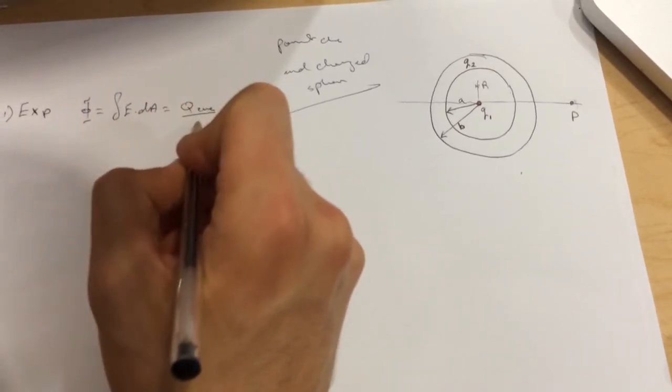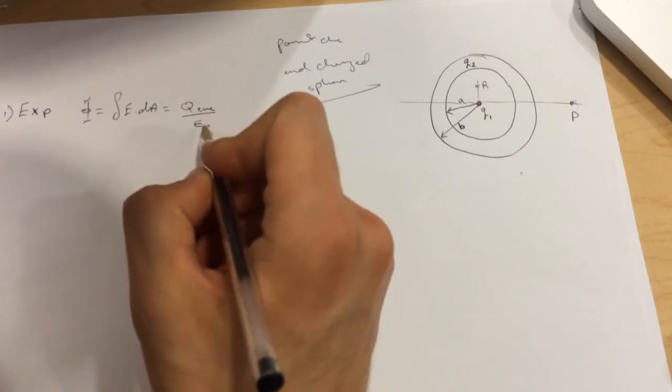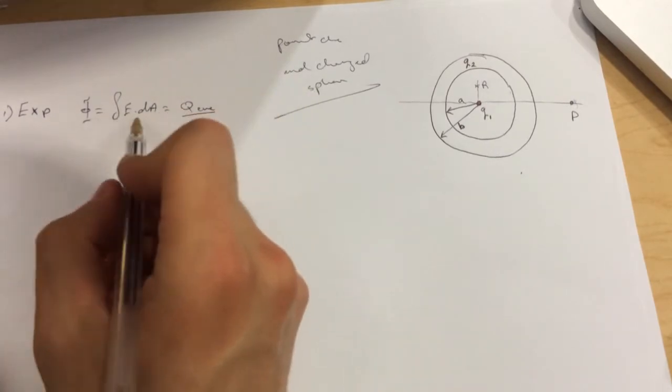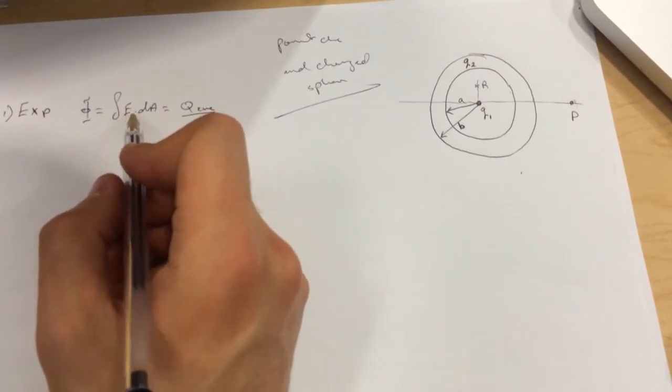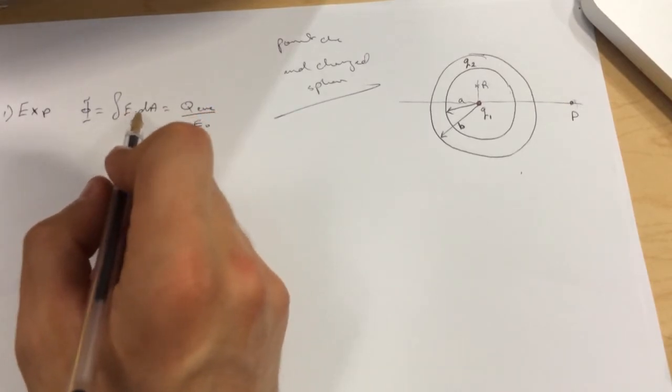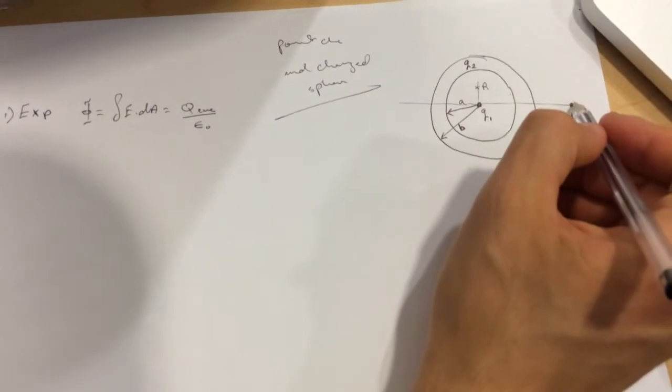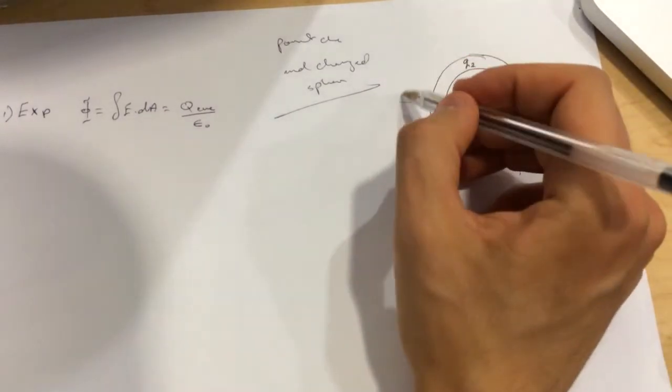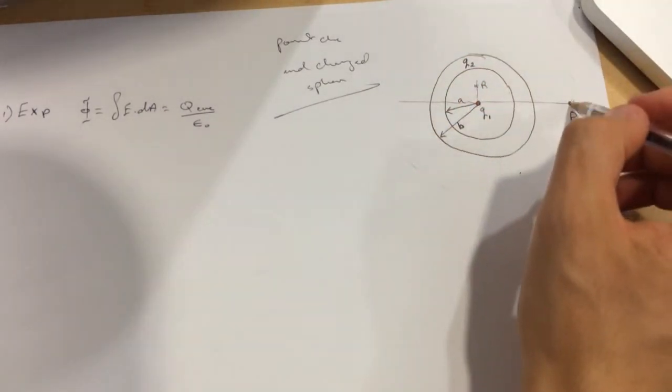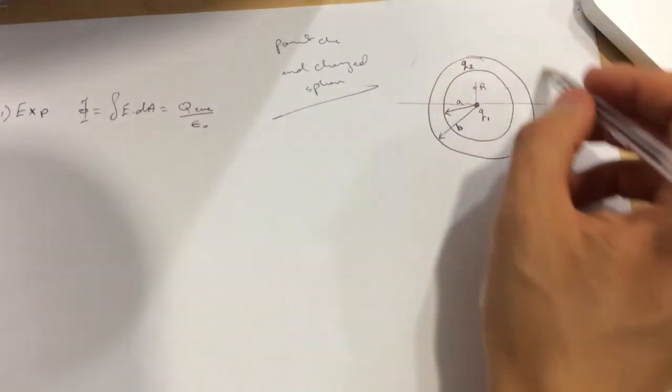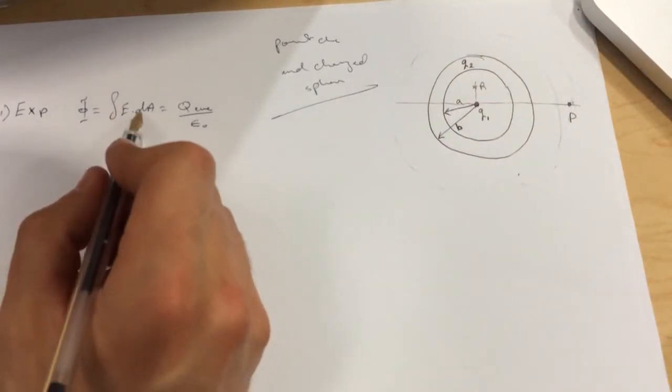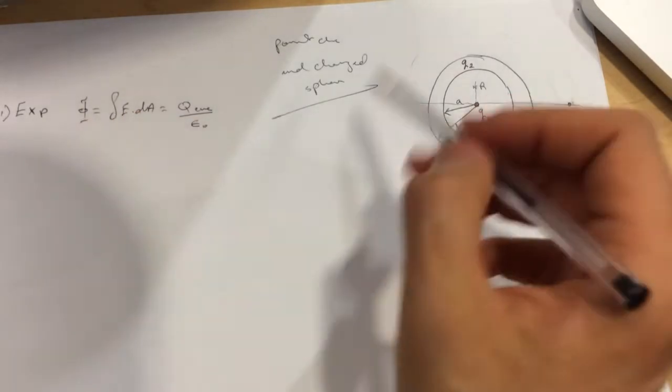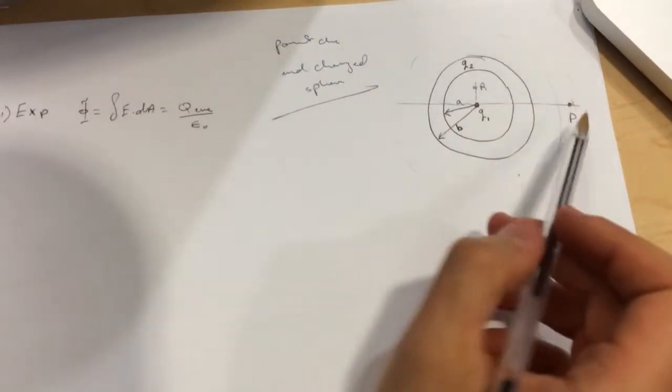Since E will be constant and the dot product between dA, if we choose this as the Gaussian surface, then dA will be just the surface of the Gaussian sphere that we drew.